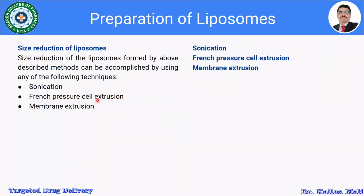Regarding size reduction of liposomes: many preparation methods yield a heterogeneous system or large unilamellar or multilamellar vesicles. To reduce the size of prepared vesicles, methods such as sonication, French pressure cell extrusion, or membrane extrusion can be used — all of which have been discussed previously.